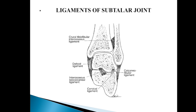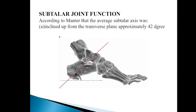Ligaments of the subtalar joint include: the crural tibiofibular interosseous ligament, deltoid ligament, calcaneofibular ligament, interosseous talocalcaneal ligament, and cervical ligament.